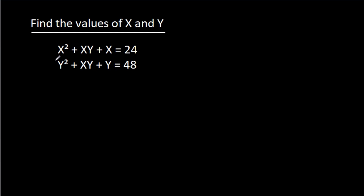In this video, we have been given that x squared minus xy minus x is 24, and y squared minus xy minus y is 48. Then we have to find the values of x and y.